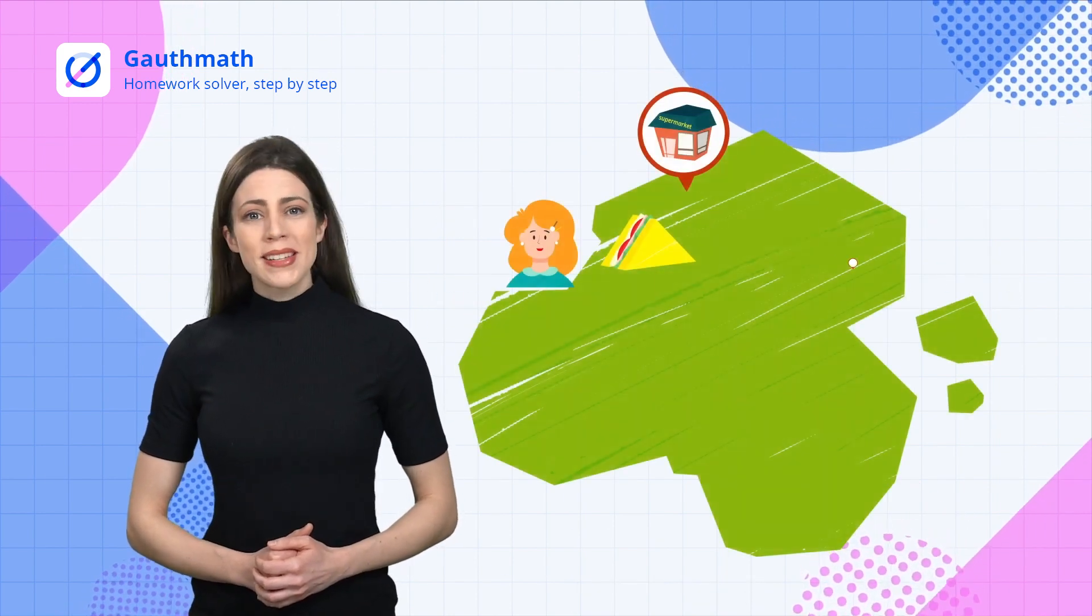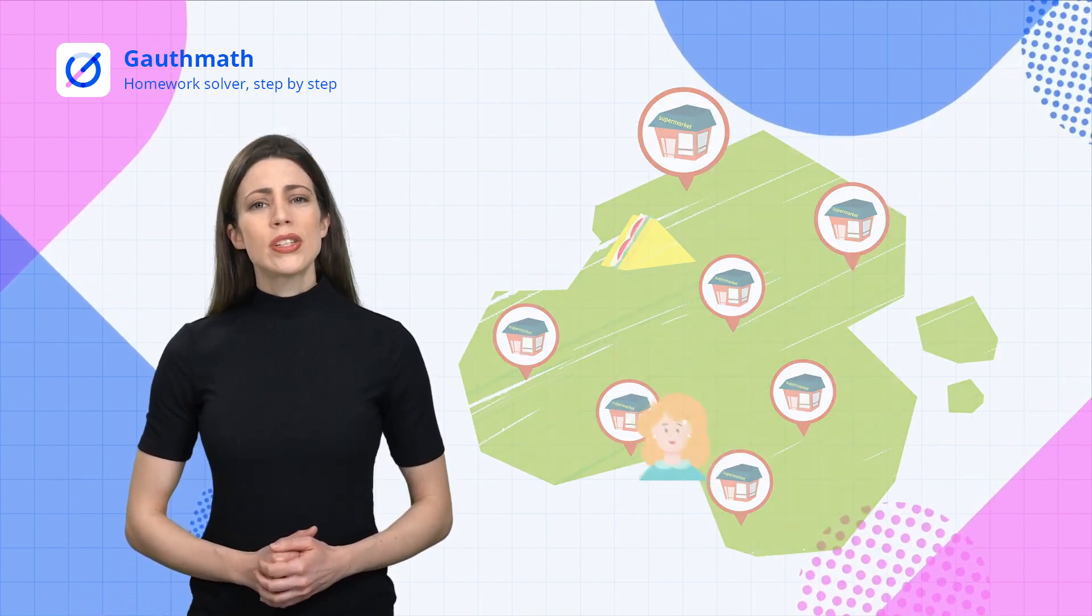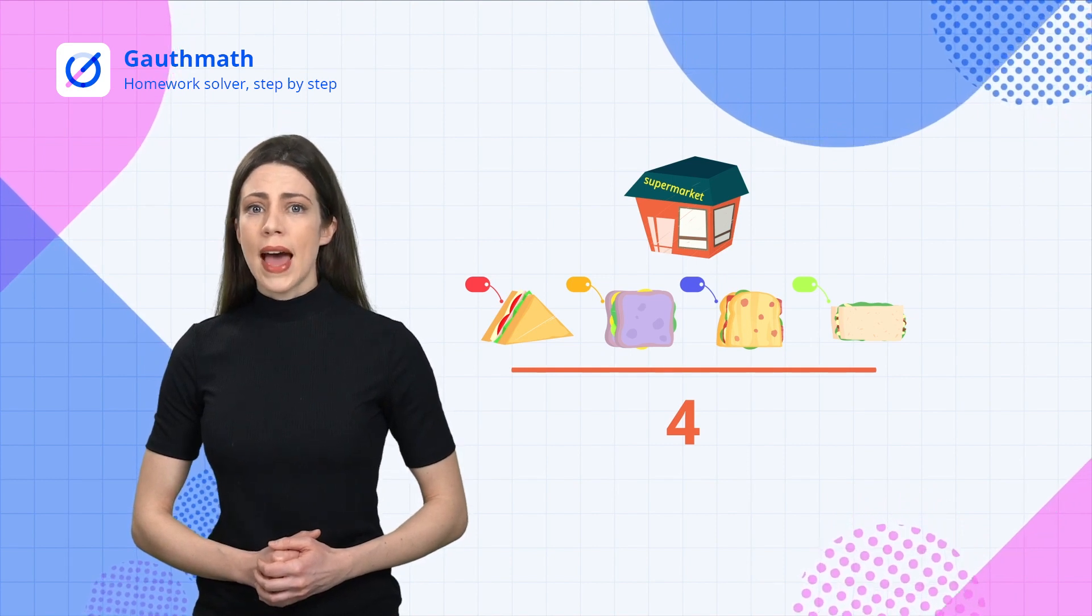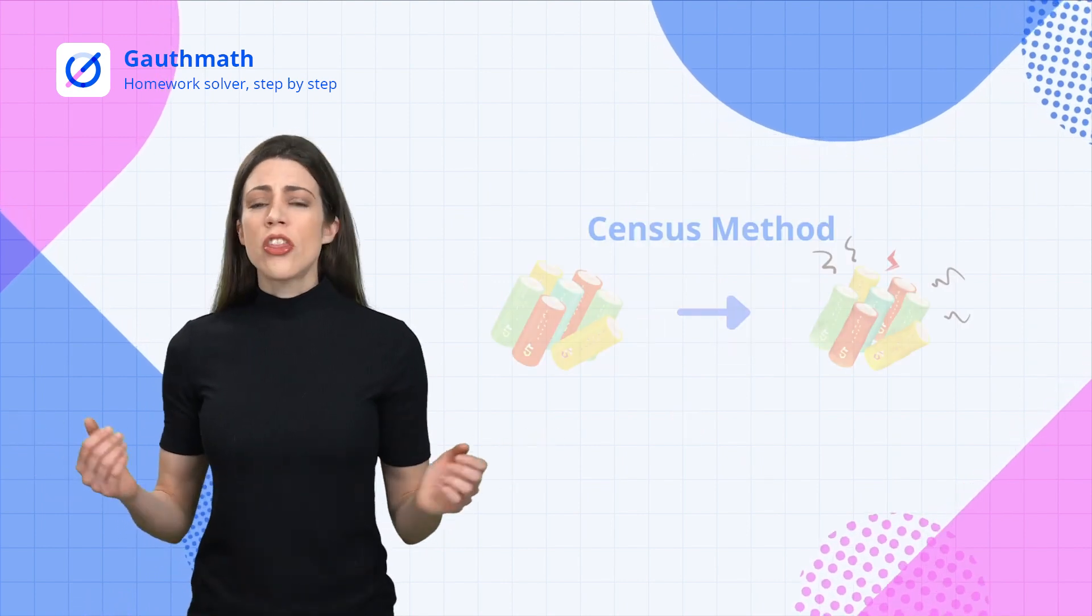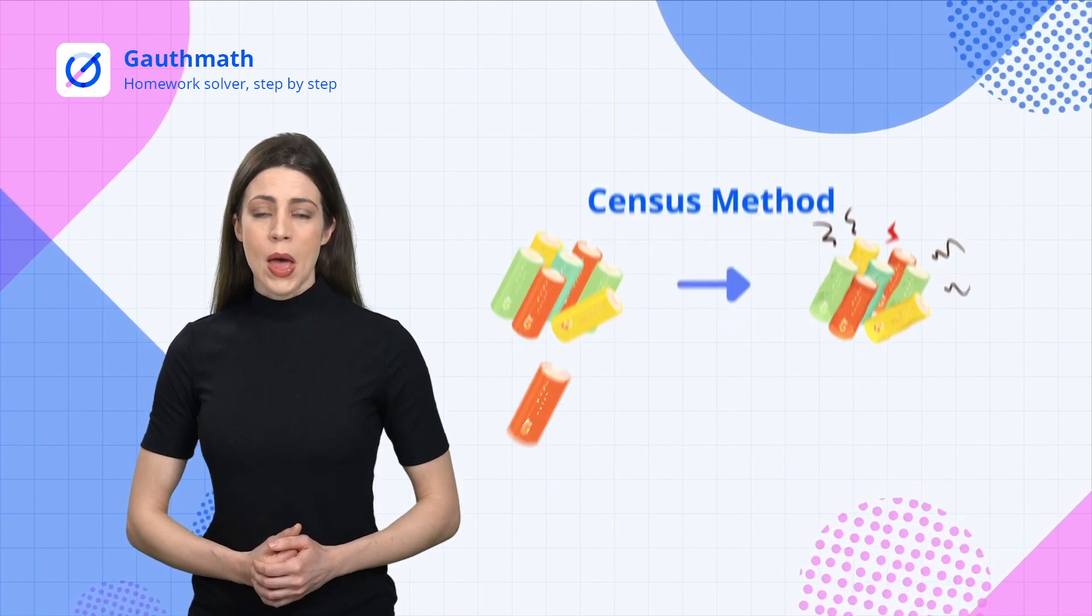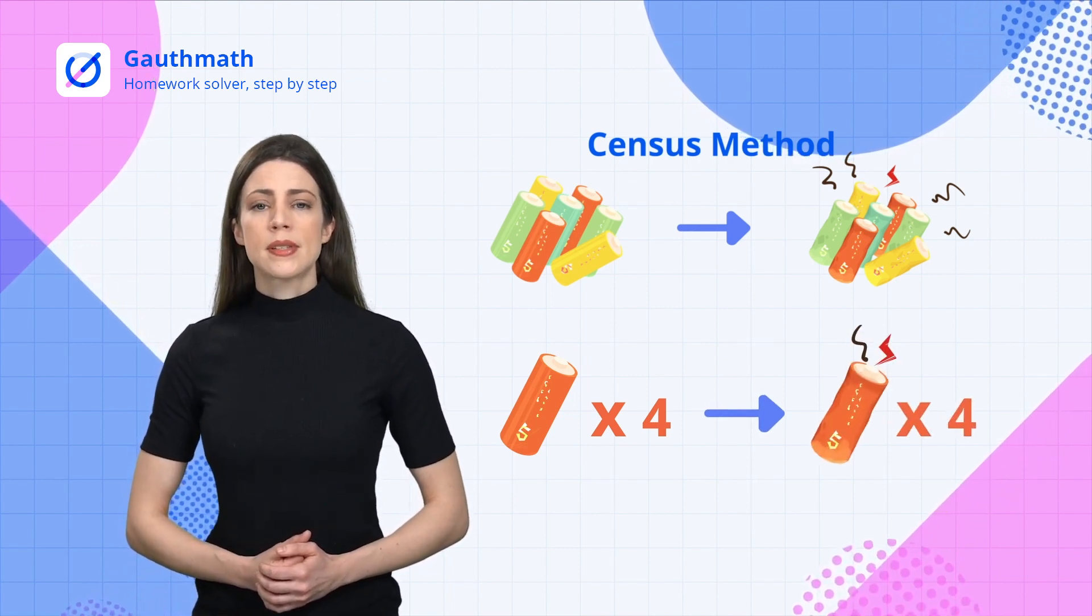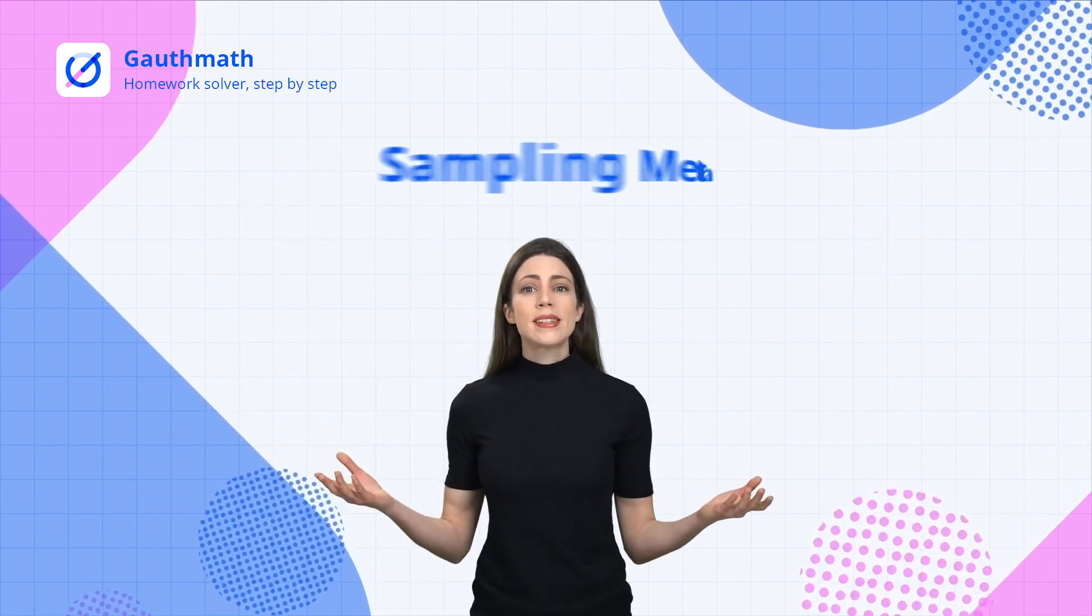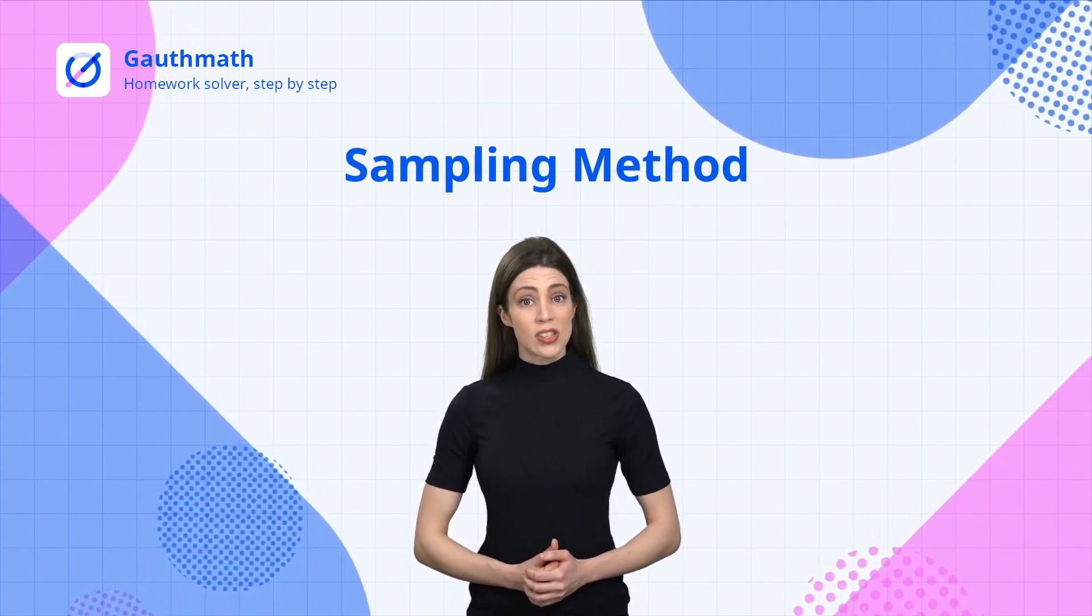Mom doesn't need to get the prices of all the sandwiches to calculate the average price. Just randomly pick up several brands. The average price of these chosen sandwiches is the estimated average price of all the sandwiches. Similarly, there's no need to use up all the batteries to get their average lifetime. Pick up some batteries from the population and use the average lifetime of these samples to estimate the average lifetime of all the batteries. This is using the sampling method to estimate the population average. It works well when the population is large.